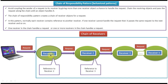Receiver one will check whether it can handle the request or not. If it can handle the request, it will handle it, and then it will check whether further processing for the request is needed. If further processing is needed, it will send the request to receiver two — receiver one has a reference to receiver two. Then receiver two will check whether it can handle the request or not, and if it can, it will handle it.